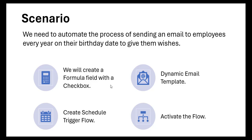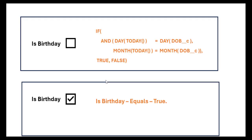When we create the flow we need some triggering condition so that the flow can automate the process. For that we will first create a formula field with a checkbox, then we will create a schedule trigger flow, and in that flow we will create a dynamic email template. Then we will debug the flow and then activate it.